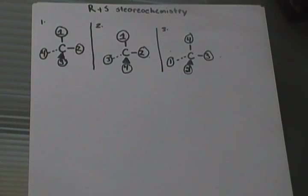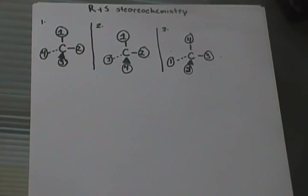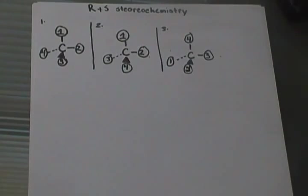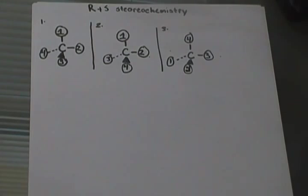Hey guys, in this video I'm just going to talk a little bit about R and S stereochemistry. I'm assuming that you already know how to assign priorities, just to keep the video short. If you don't know how to assign priorities, I'll have another video regarding that. But for this video I'm just going to show how to mechanically label a molecule R or S.